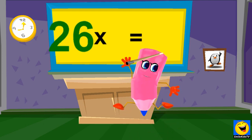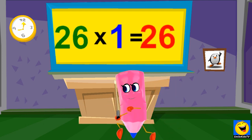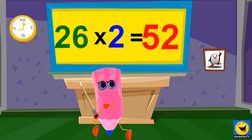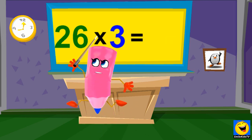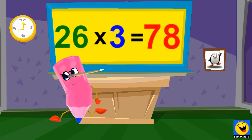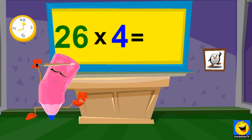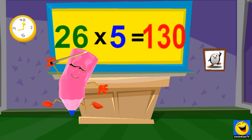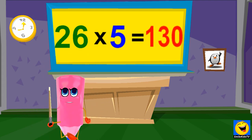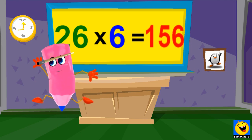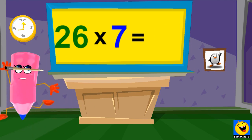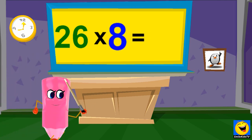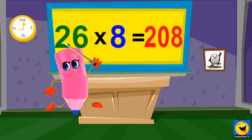26 times 1 is 26. 26 times 2 are 52. 26 times 3 are 78. 26 times 4 are 104. 26 times 5 are 130. 26 times 6 are 156. 26 times 7 are 182. 26 times 8 are 208.